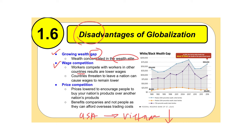That's what we're talking about with wage competition. Companies can threaten to leave a nation, and this could cause wages to lower. For example, if I was employing a lot of people in Vietnam and Vietnam started to regulate me and I threatened to pull out, I could actually keep the wages lower in Vietnam.